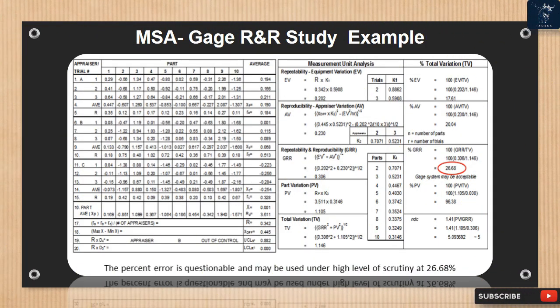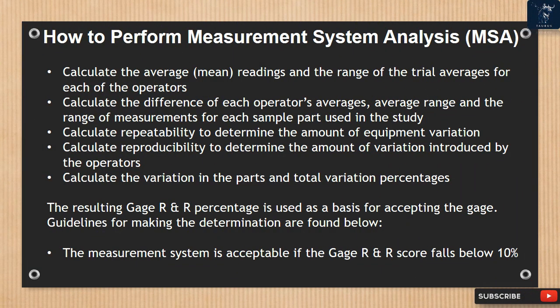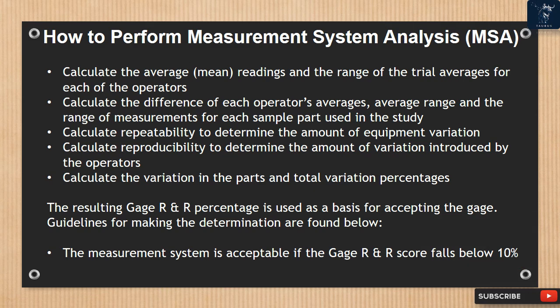MSA gauge R&R study example. Calculate the average — mean — readings and the range of the trial averages for each of the operators. Calculate the difference of each operator's averages, average range, and the range of measurements for each sample part used in the study. Calculate repeatability to determine the amount of equipment variation. Calculate reproducibility to determine the amount of variation introduced by the operators. Calculate the variation in the parts and total variation percentages. Calculate the resulting gauge R&R percentage, which is used as a basis for accepting the gauge.